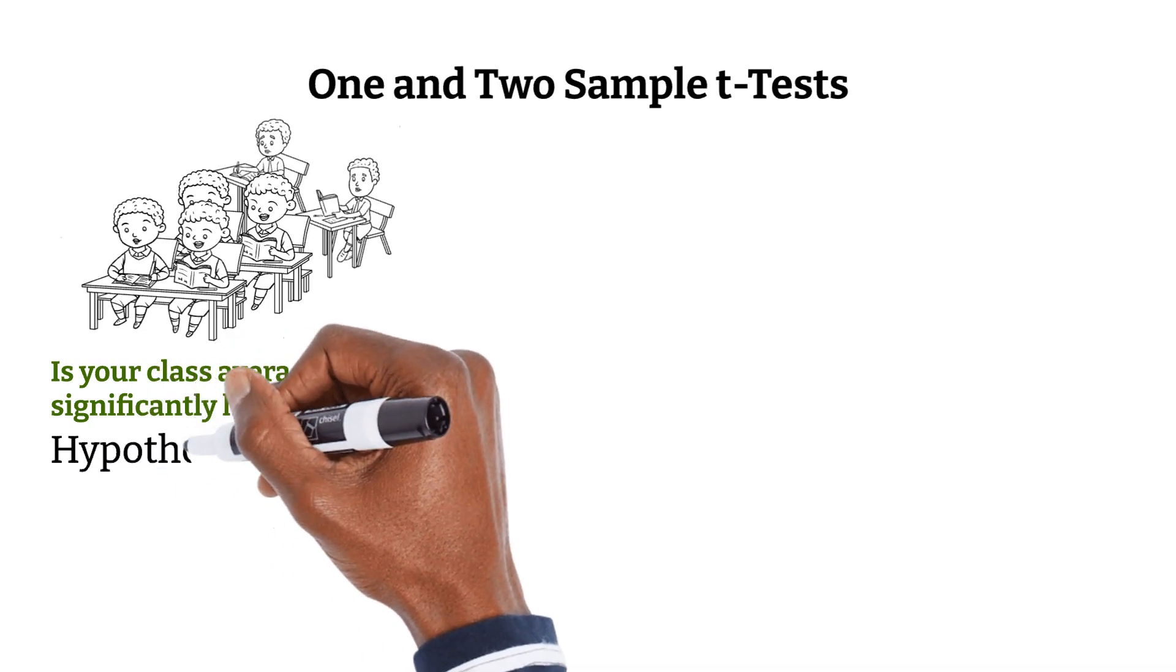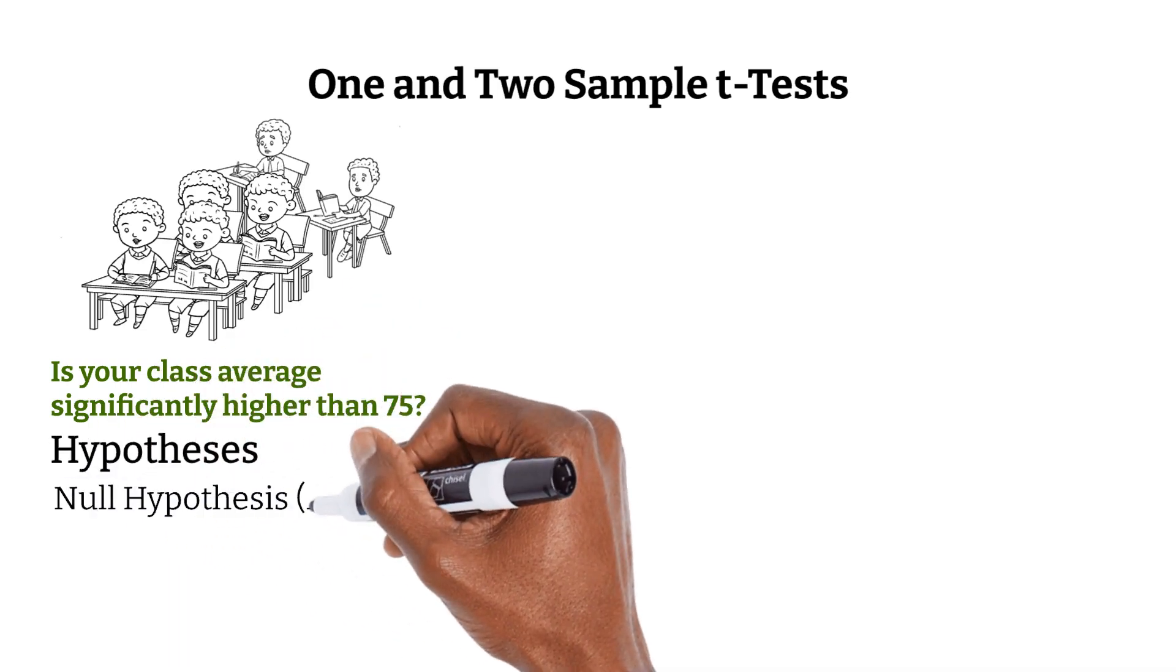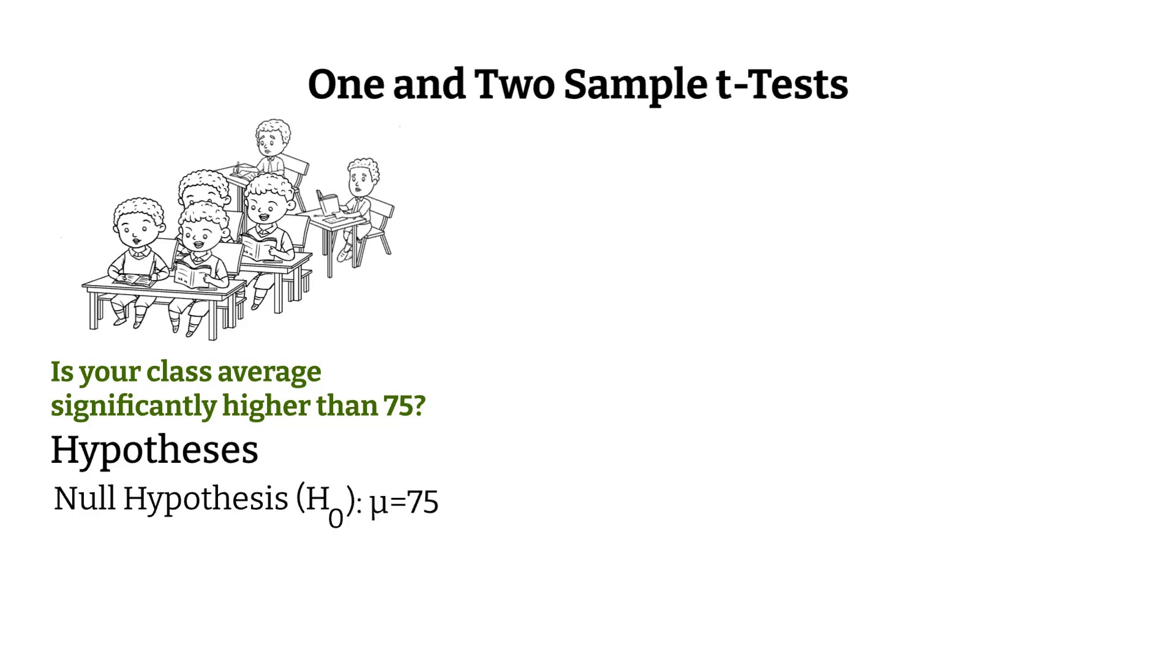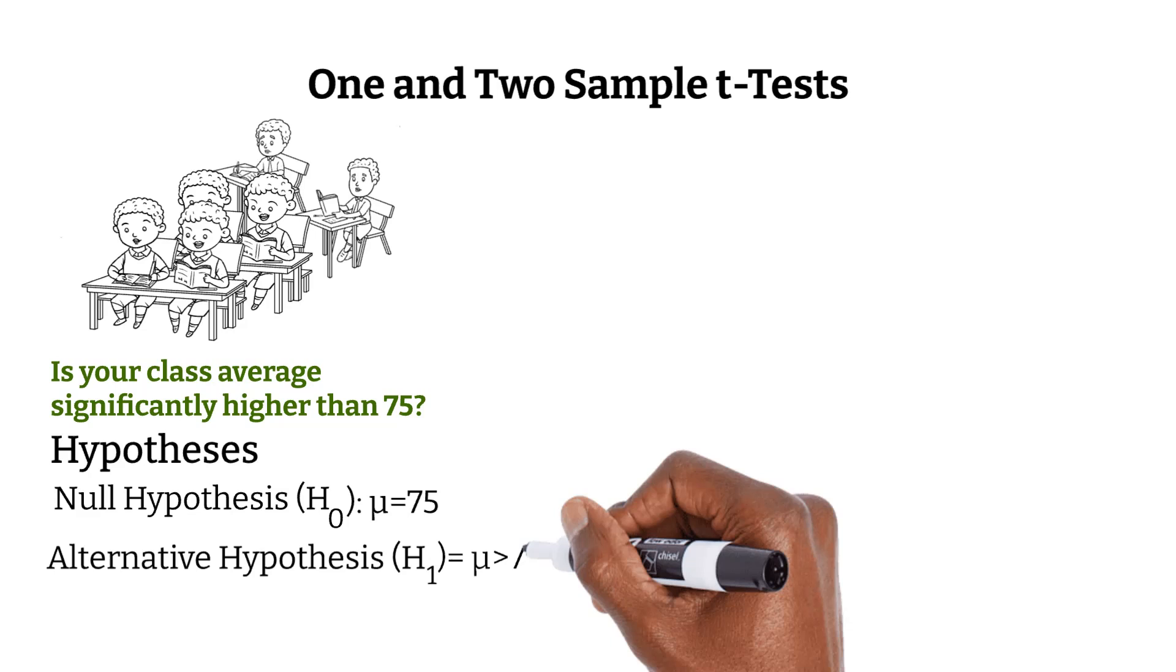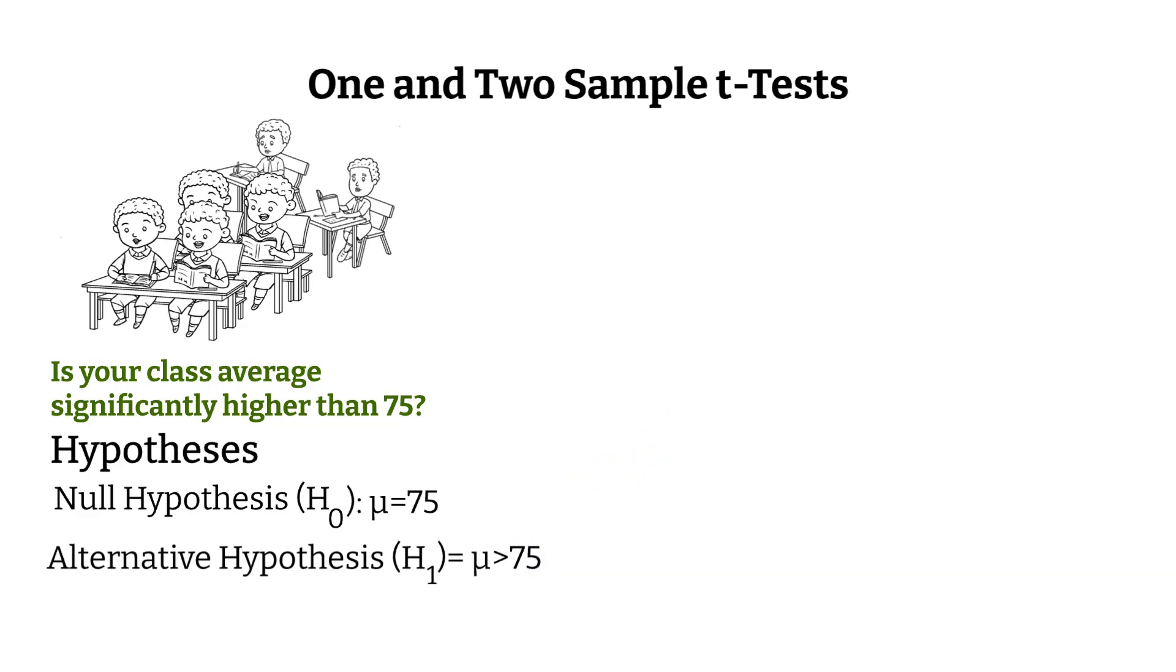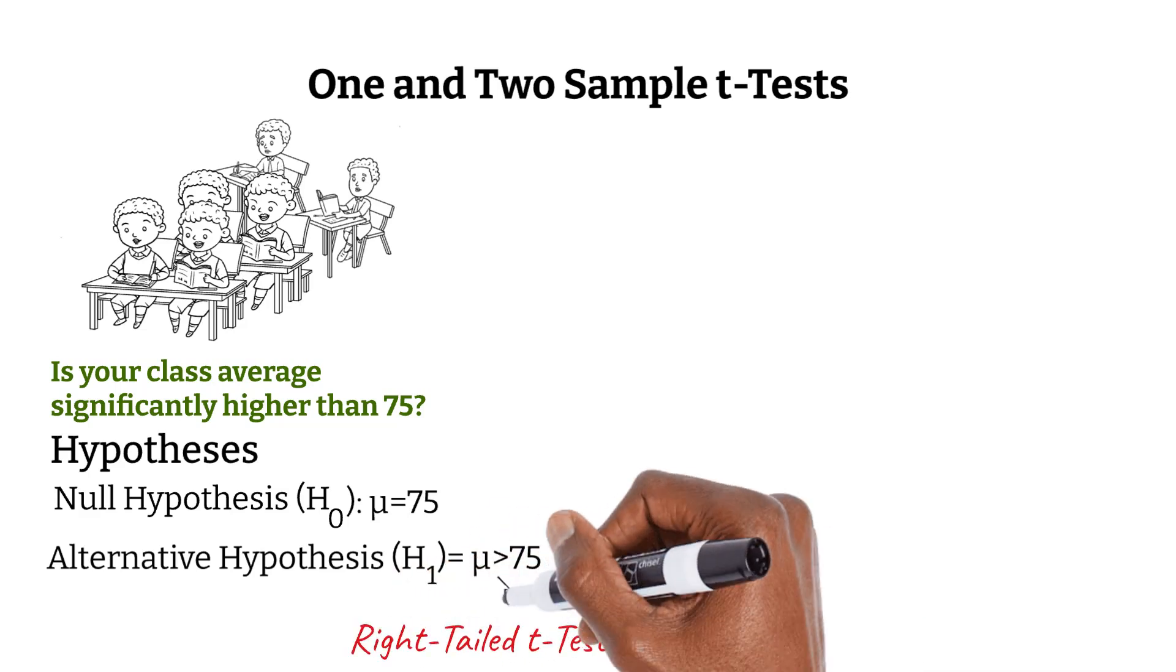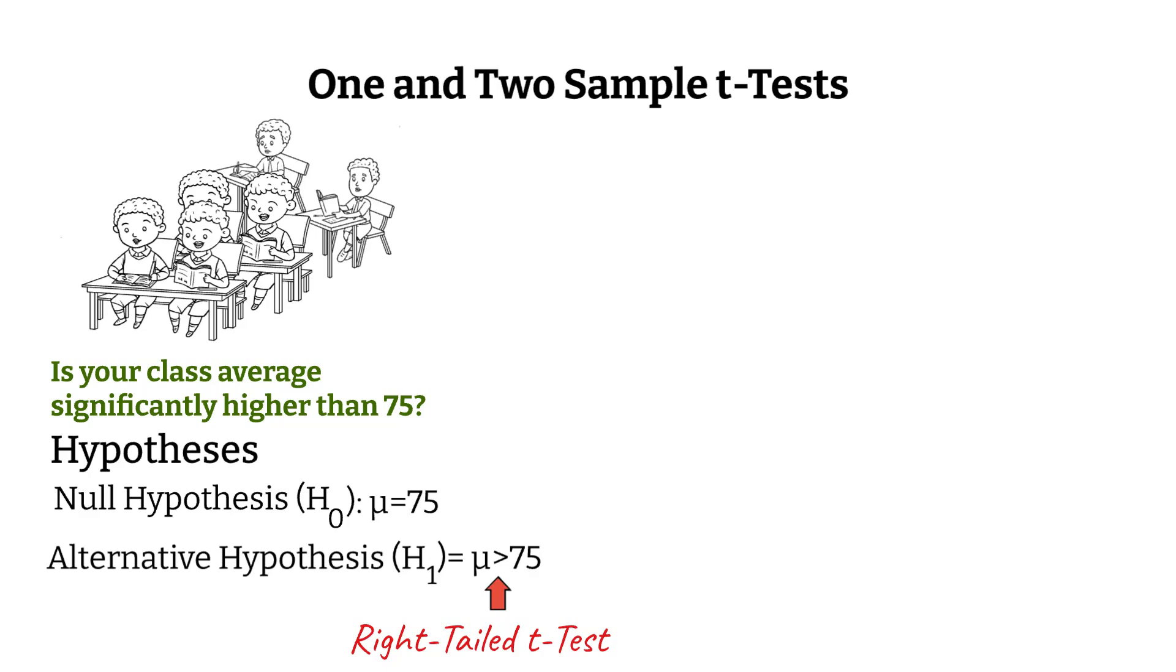Let's start by stating the hypotheses. The null hypothesis is mu equals 75. This means there is no significant difference between your class's mean and the mean of the school. The alternative hypothesis, H1, is that the mean is greater than 75. This means that your class scores are significantly higher. This is called a right-tailed test, because we're checking if the sample mean falls far enough to the right or higher than the claimed mean. A left-tailed test would check if the sample mean is significantly less than the claimed value. A two-tailed test checks for any difference, either higher or lower.